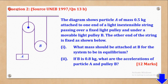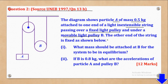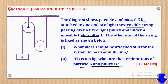Now we go to Question 2, which came from UNEB 1997 Paper 2, Question 13b. It says: the diagram shows particle A of mass 0.5kg attached to one end of a light inextensible string, passing over a fixed light pulley and under a movable light pulley B. The other end of the string is fixed. Roman 1: what mass should be attached to B for the system to be in equilibrium? Roman 2: if B is 0.8kg, what are the accelerations of the particle and pulley B?